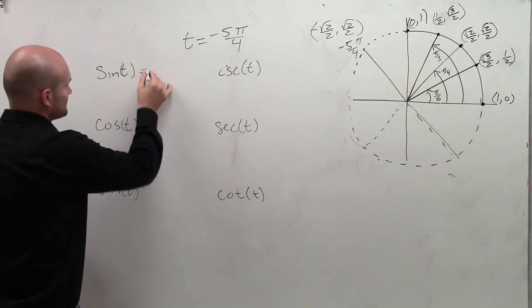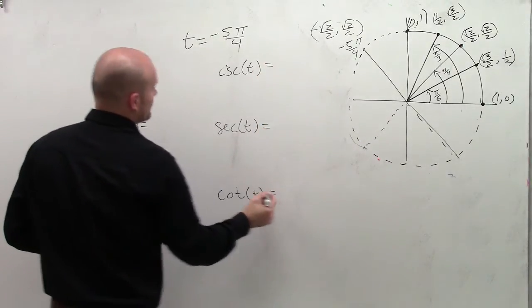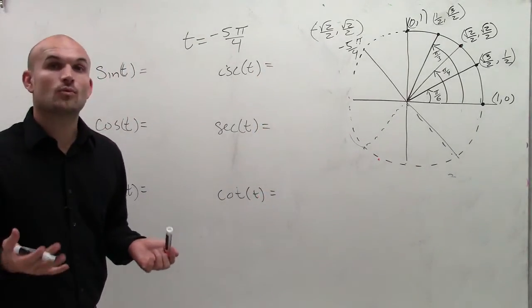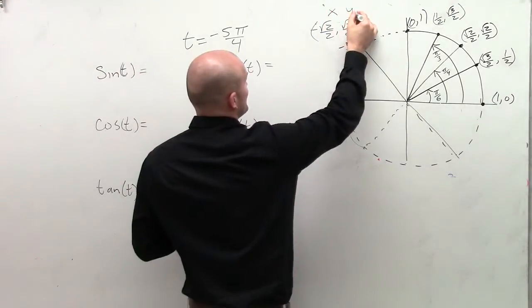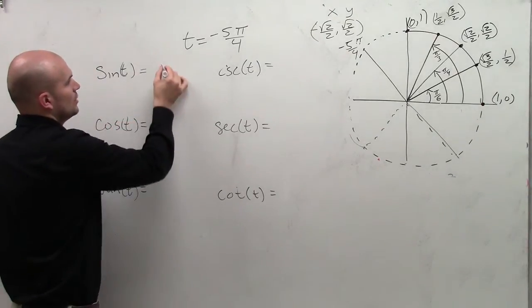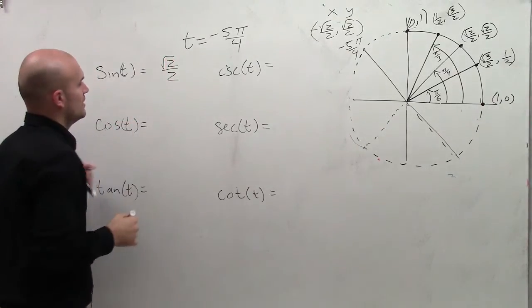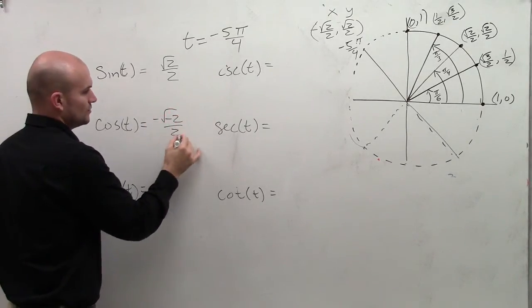Now remember the sine represents the y-coordinate of your point. So remember, each coordinate point has an x and a y-coordinate. So the sine is going to represent the y-coordinate, which is square root of 2 over 2. And cosine is going to represent the x-coordinate, which would be negative square root of 2 over 2.